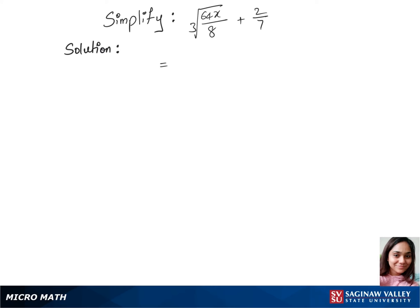So 8 times 8 is 64. So we can write cubic root of 8x plus 2 over 7.